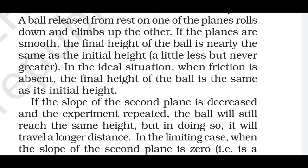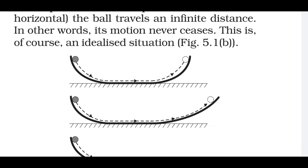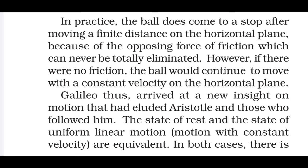In the ideal situation where friction is absent, the final height of the ball is the same as the initial height. If the slope of the second plane is decreased and the experiment repeated, the ball will still reach the same height, but in doing so it will travel a longer distance. In the limiting case, when the slope of the second plane is zero, that is, horizontal, the ball travels an infinite distance. In other words, its motion never ceases. This is, of course, an idealized situation. In practice, the ball does come to stop after moving a finite distance on the horizontal plane because of the opposing force of friction, which can never be totally eliminated. However, if there were no friction, the ball would continue to move with a constant velocity on the horizontal plane.